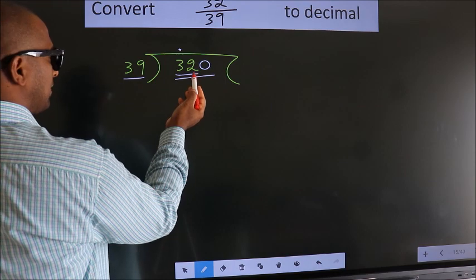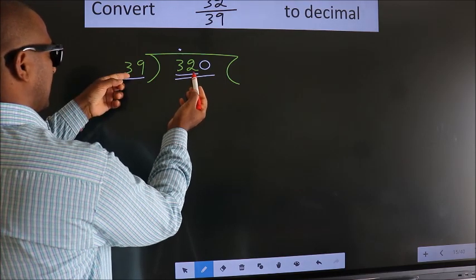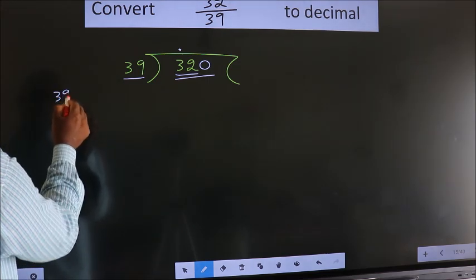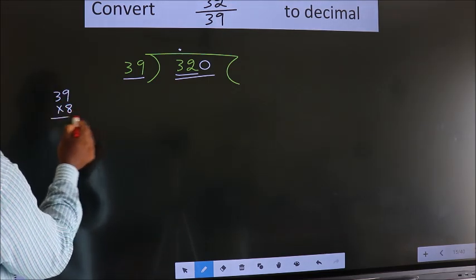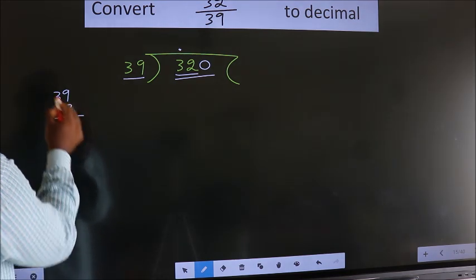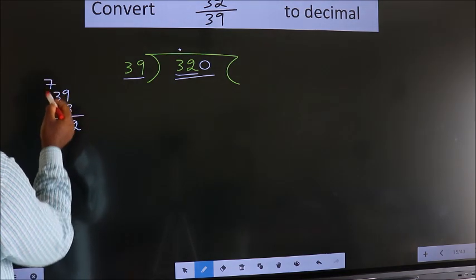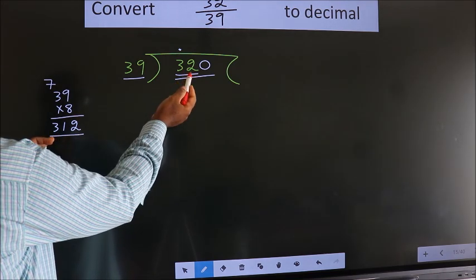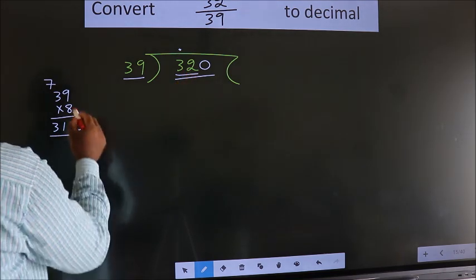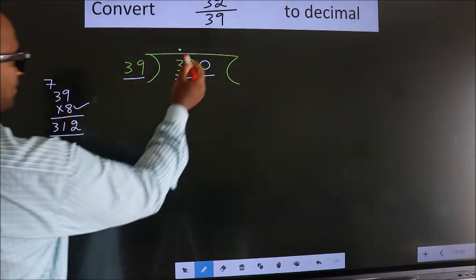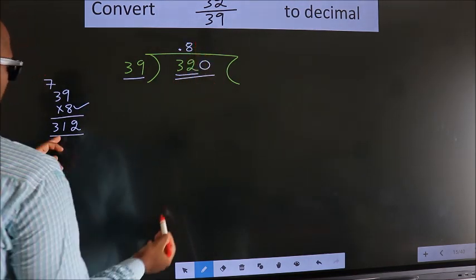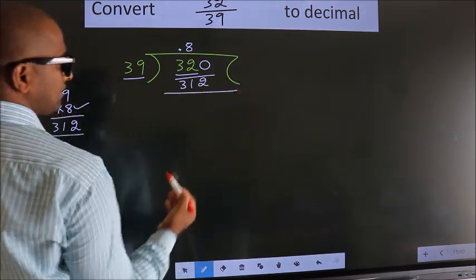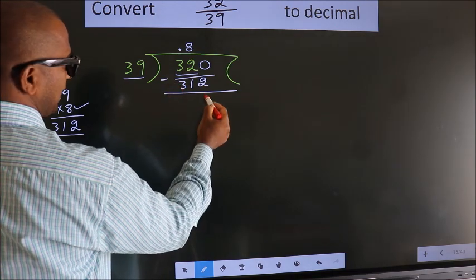A number close to 320 in the 39 table is, let us go with 8. So 39 times 8. 8 nines 72, 2 carry 7. 8 times 3 is 24 plus 7 equals 31. So 312 is close to 320. We should go with 8 times. 8 times 312. Now we subtract and we get 8.